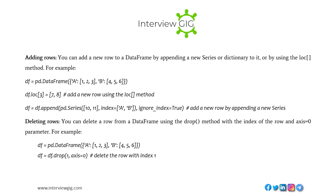Adding rows: you can add a new row to a DataFrame by appending a new Series or dictionary, or by using the loc method. For example: df = pd.DataFrame({'a': [1,2,3], 'b': [4,5,6]}), df.loc[3] = [7,8] to add a row using loc, or df = df.append(pd.Series([10,11], index=['a','b']), ignore_index=True) to add a row by appending a new Series.